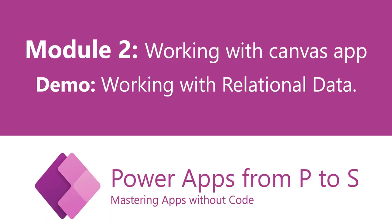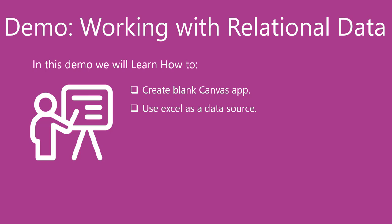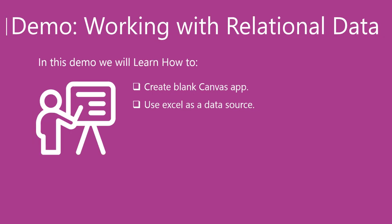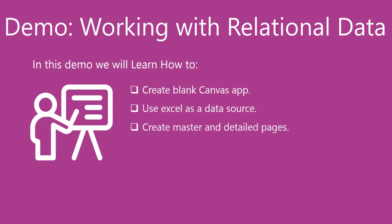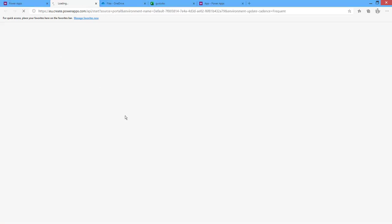This is a demo on Module 2: Working with Canvas Apps. In this demo, we will learn how to create a blank canvas app and how to use Excel as a data source, create master and detailed pages, create navigations between screens, and work with formulas. You can create a blank canvas app from the maker site or from the create PowerApps site directly.